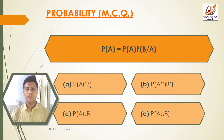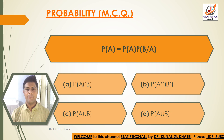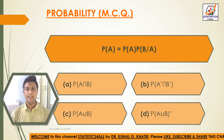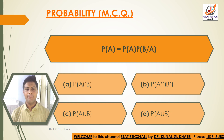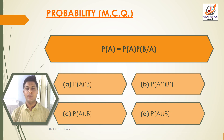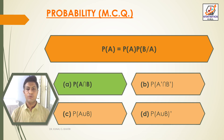Question 14: P(A∩B) is equal to P(A) · P(B|A). Options: Option A: P(A∩B). Option B: P(A'∩B'). Option C: P(A∪B). Option D: P(A∪B)'. Answer: Option A — P(A∩B) = P(A) · P(B|A).